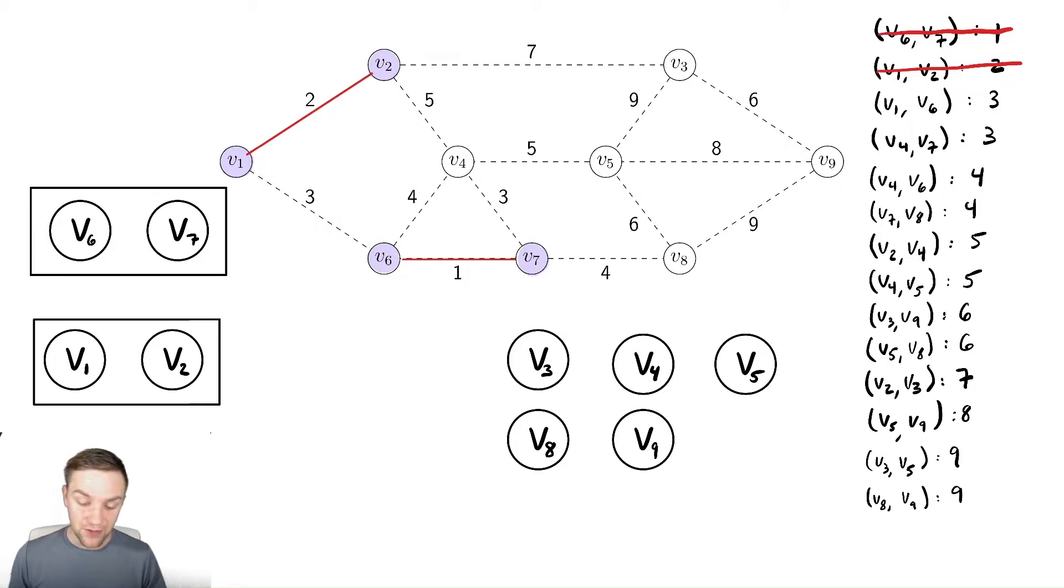We're then going to add v1 and v6 according to our list over here. And in order to do that, notice that both of those are already in the tree. So we might need to be careful. We need to verify that we do not create a cycle. To avoid creating a cycle, what we're going to do is we're going to check, are they in the same set?